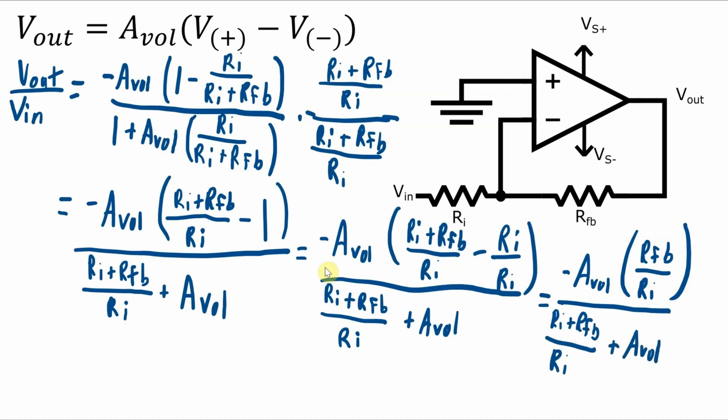Now if AVOL gets really big and it doesn't necessarily have to approach infinity, then the values of this term on the numerator and the AVOL by itself on the denominator will be much bigger than the RI plus RFB over RI.